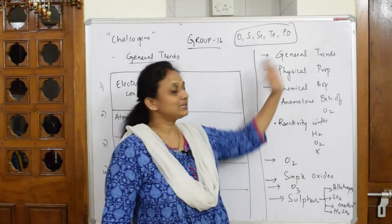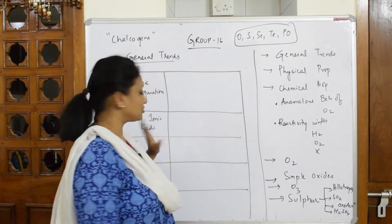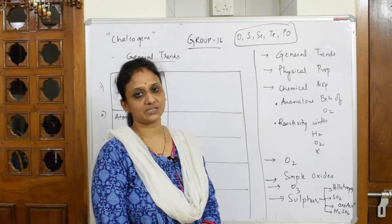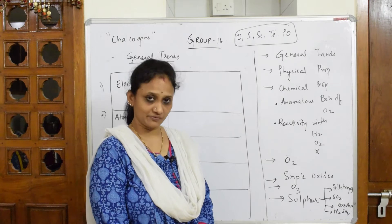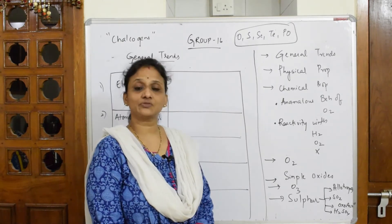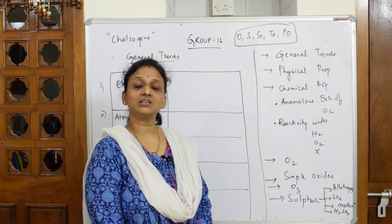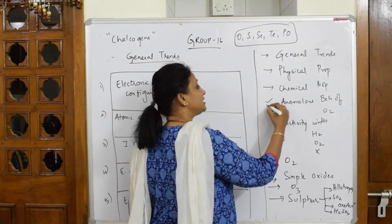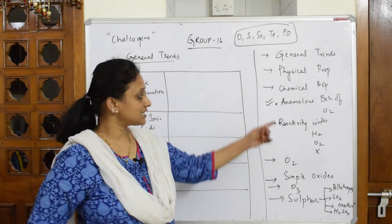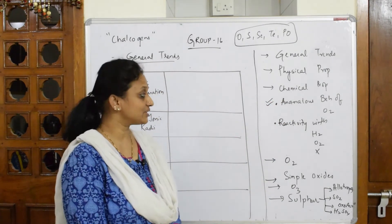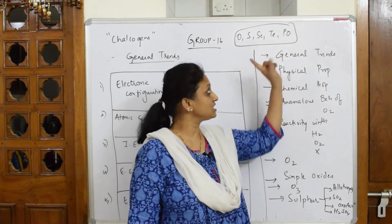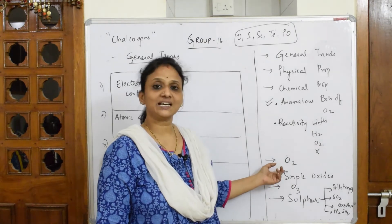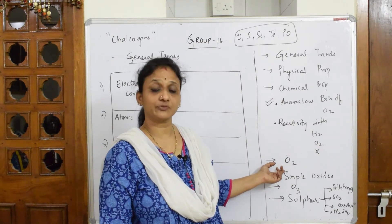Let's first see the top topics to study for your exam. We will be learning about general trends — I've already drawn the table for you. Then we'll study one or two questions based on physical properties, then gradually go into chemical properties including the anomalous behavior of oxygen. After that, I'll show you trends in reactivity of these compounds with hydrogen, oxygen, and halogens.